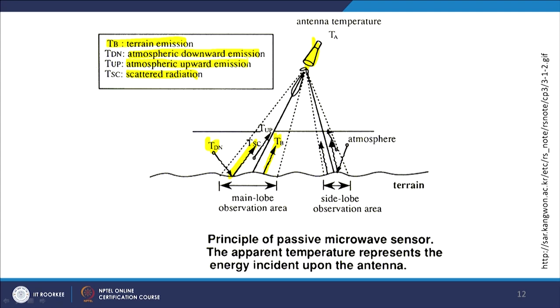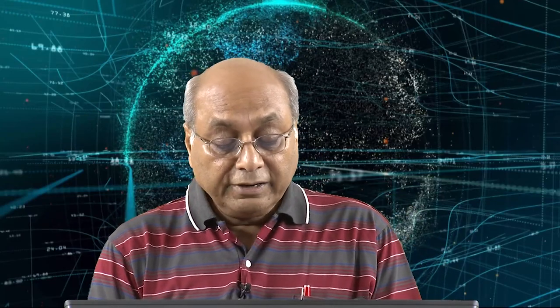The atmospheric upward emission T-up is also there. This whole area provides energy not only from terrain emission, but also energy generated within the atmosphere in the passive microwave part of the EM spectrum — all of which is recorded by the horn or antenna. There may also be some energy coming through the side lobe observation area, including both atmospheric components and natural terrain emission.